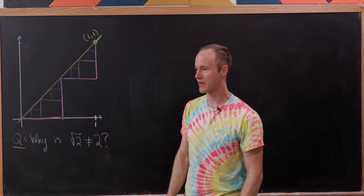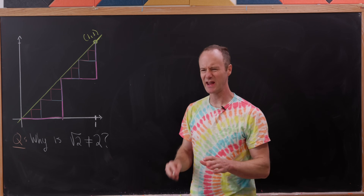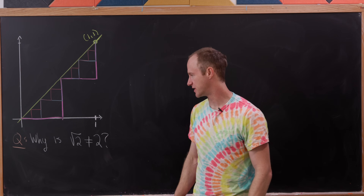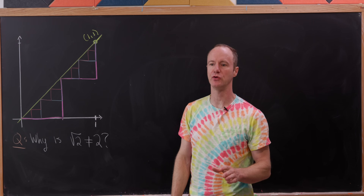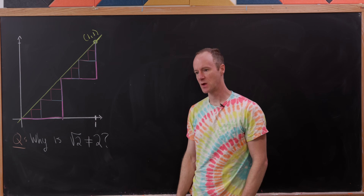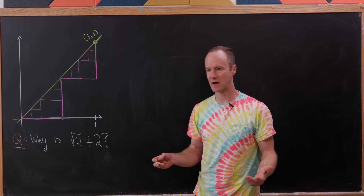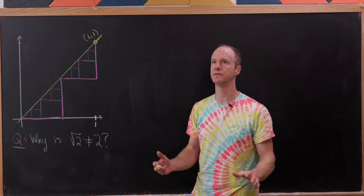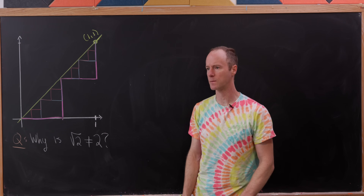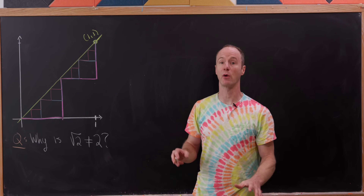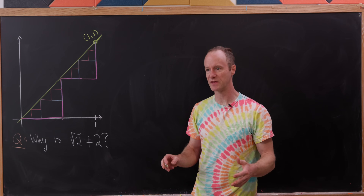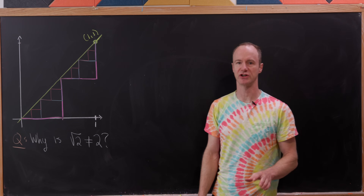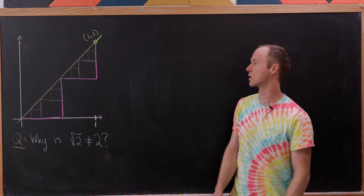Today we're going to look at a really classic math puzzle, and it can really come down to the silly question of why the square root of 2 is not equal to 2. Of course, we could answer that by saying if you square the square root of 2 you get 2, but if you square 2 you get 4. But that's not really what we're getting at here — we're looking at a seemingly geometric contradiction.